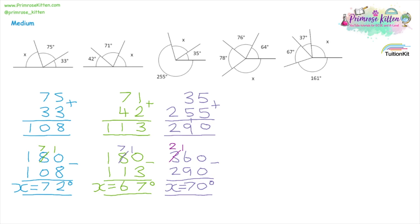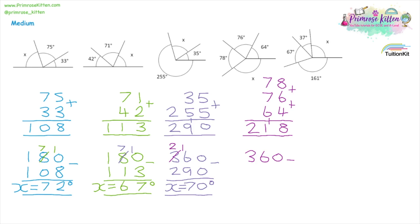This time we have three clues. We have 78, 76, and 64. Three clues — add up three numbers. 8 plus 6 plus 4 is 18, carry the 1. 7 plus 7 is 14, plus 6 is 20, plus the 1 is 21, carry the 1. So we have 218. It's still a circle, so we take away from 360. Borrow one: 10 take away 8, 5 take away 1, and 3 take away 2. Our missing angle x is equal to 142 degrees.